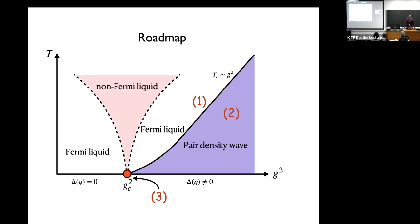In principle you can calculate anything from the propagator. We have thought about renormalization in the particle-hole channel and I will show some expressions especially near the quantum critical point where it becomes important, but away from there it's not so important.